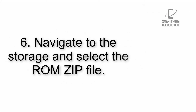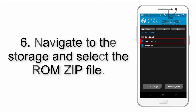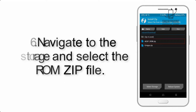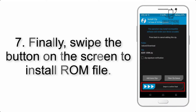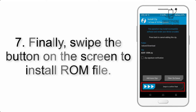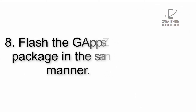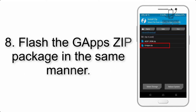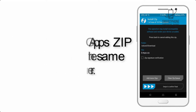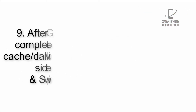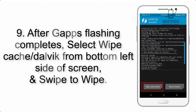Step 6: Navigate to the storage and select the ROM zip file. Step 7: Finally, swipe the button on the screen to install the ROM file. Step 8: Flash the GApps zip package in the same manner.